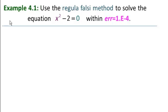In this video, we're going to solve our first example for using the Regula-Falsi method. Example 4.1: Use the Regula-Falsi method to solve the equation x squared minus 2 equals 0 within an error of 10 to the minus 4.